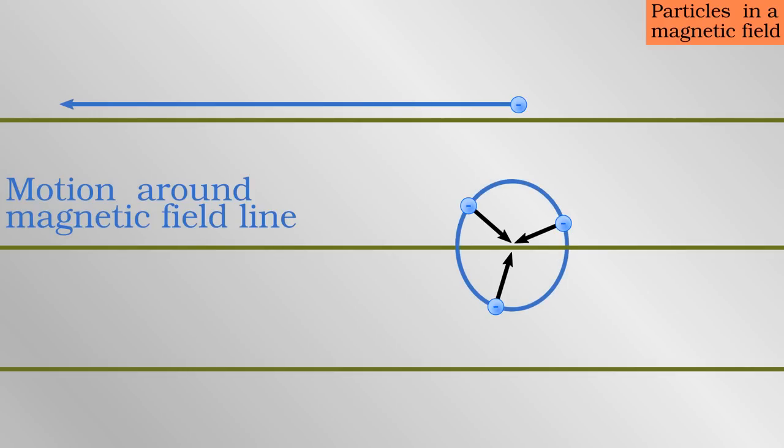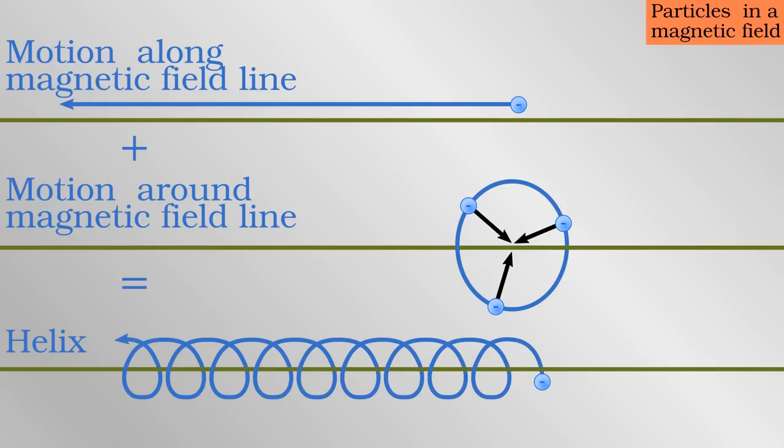If the particle is moving parallel to, or in other words along, the magnetic field line, it feels no force whatsoever and is free to move however it likes. In general a particle will have a combination of these two motions which adds up to a spiral around a given magnetic field line.